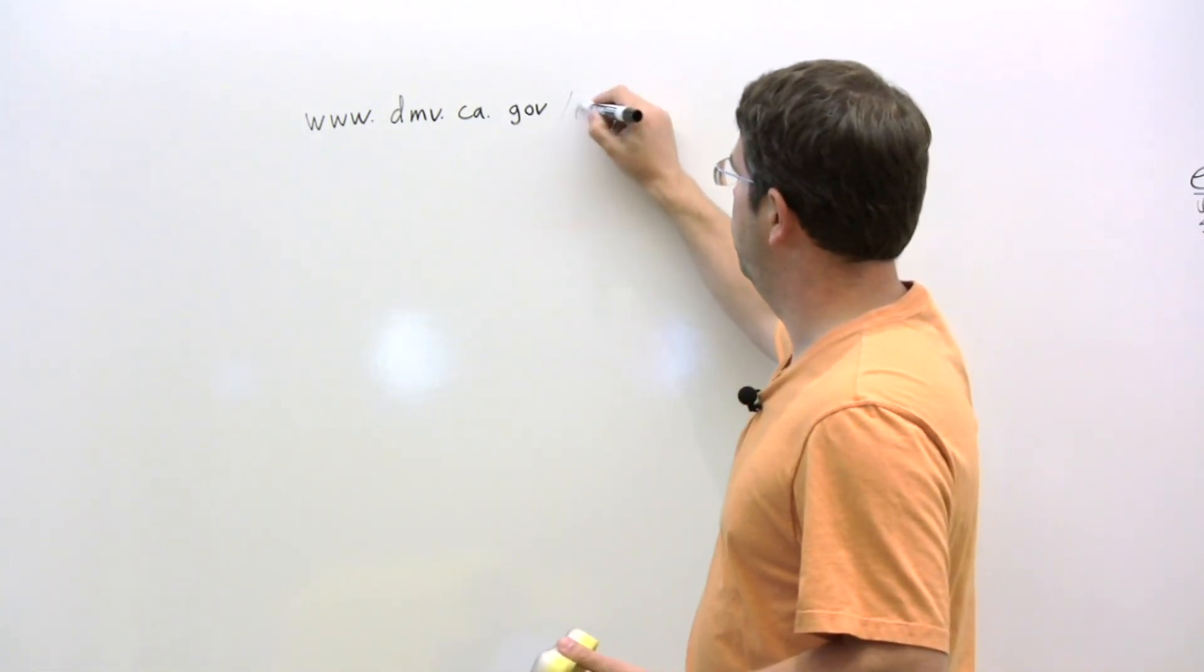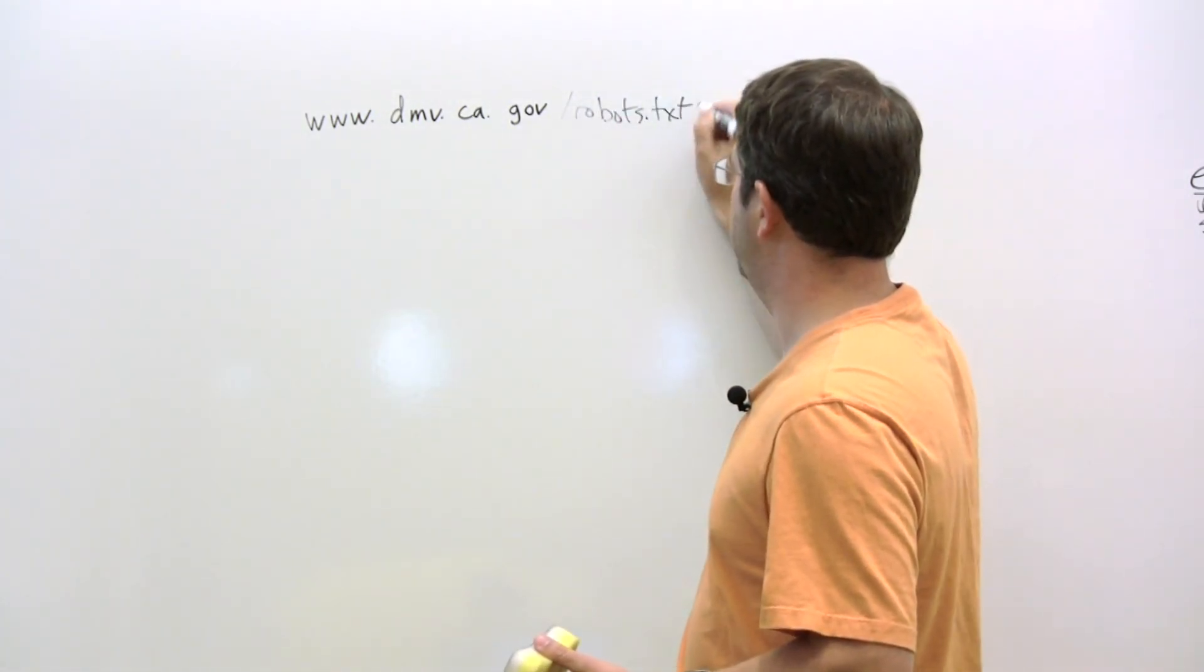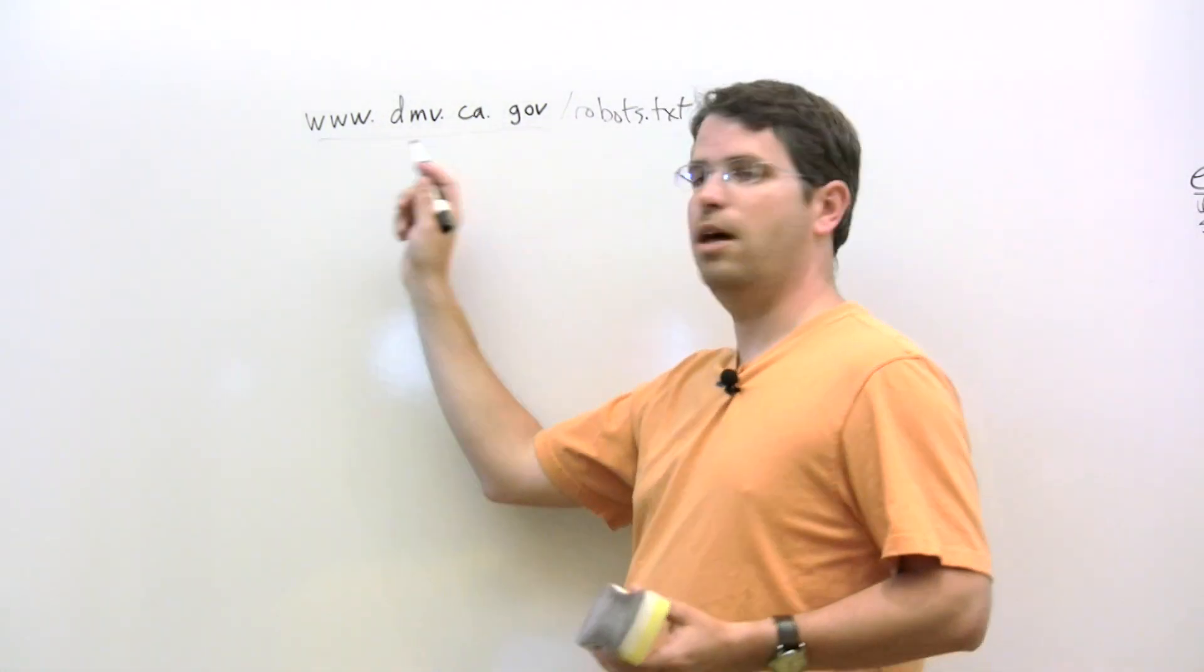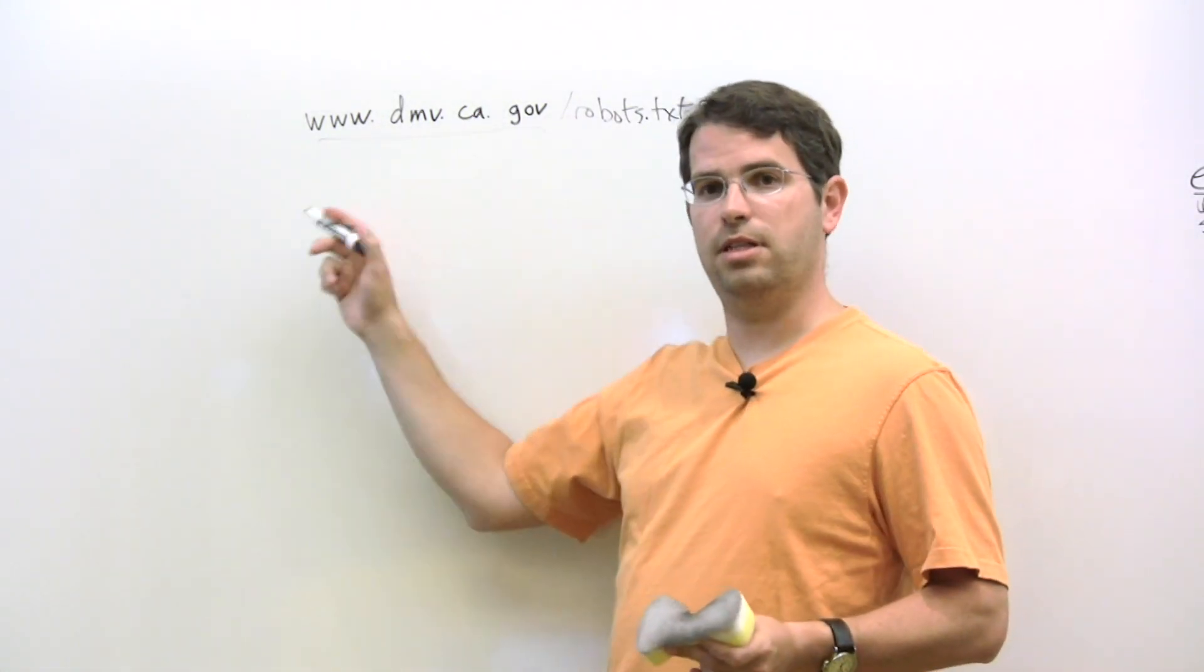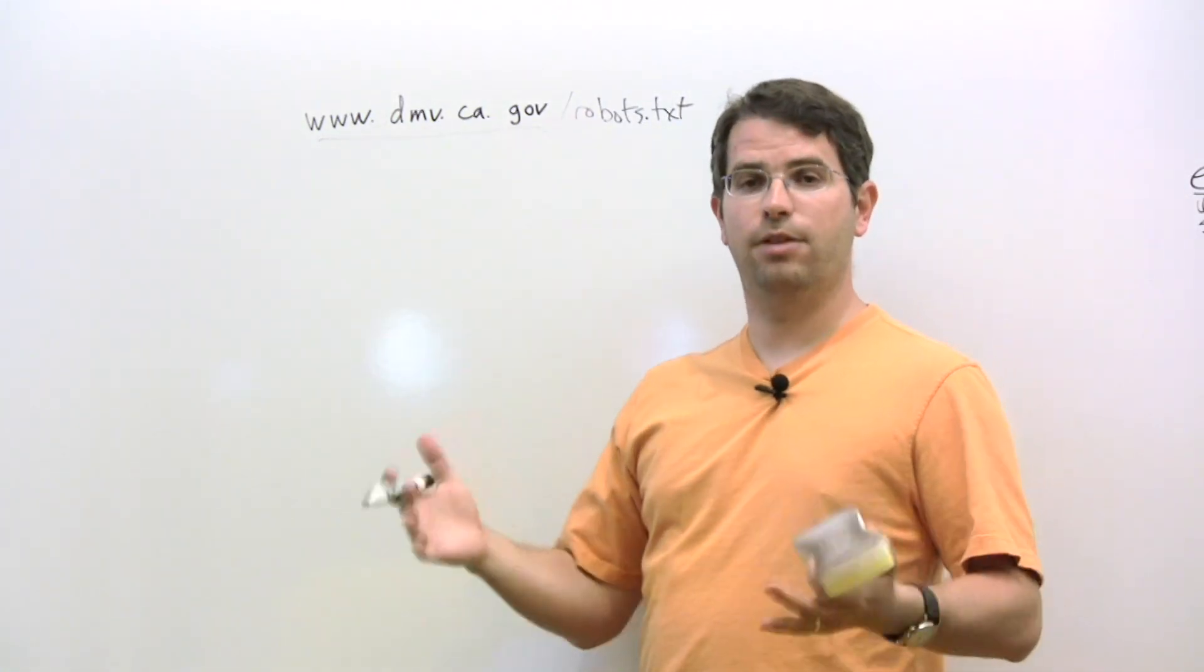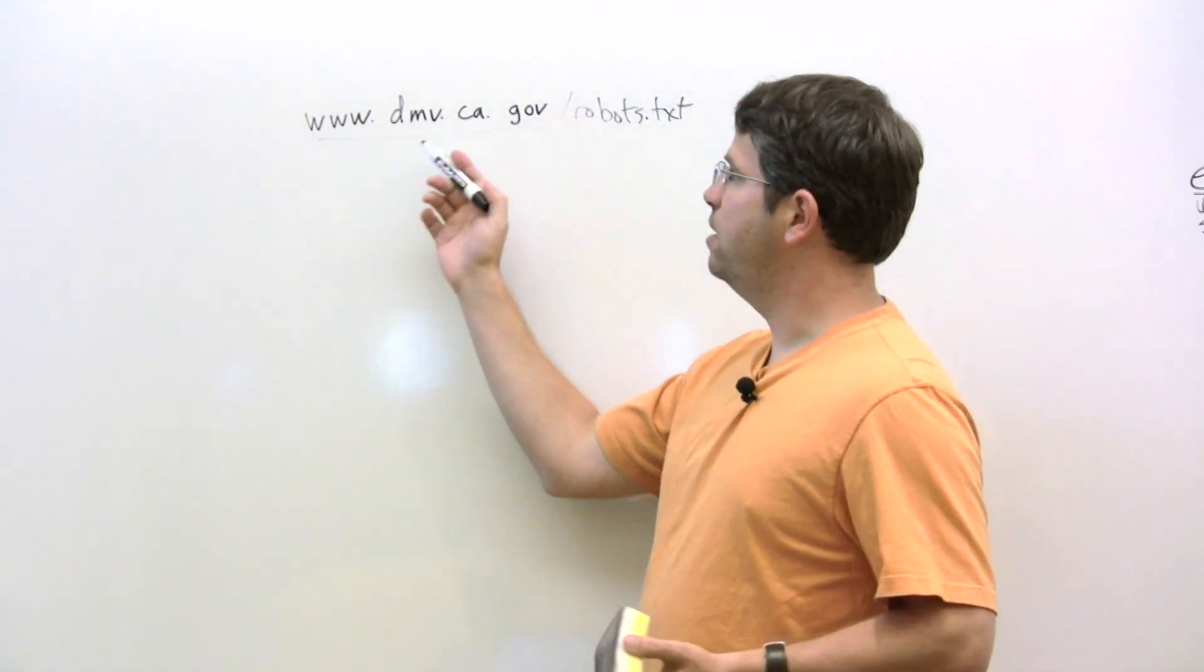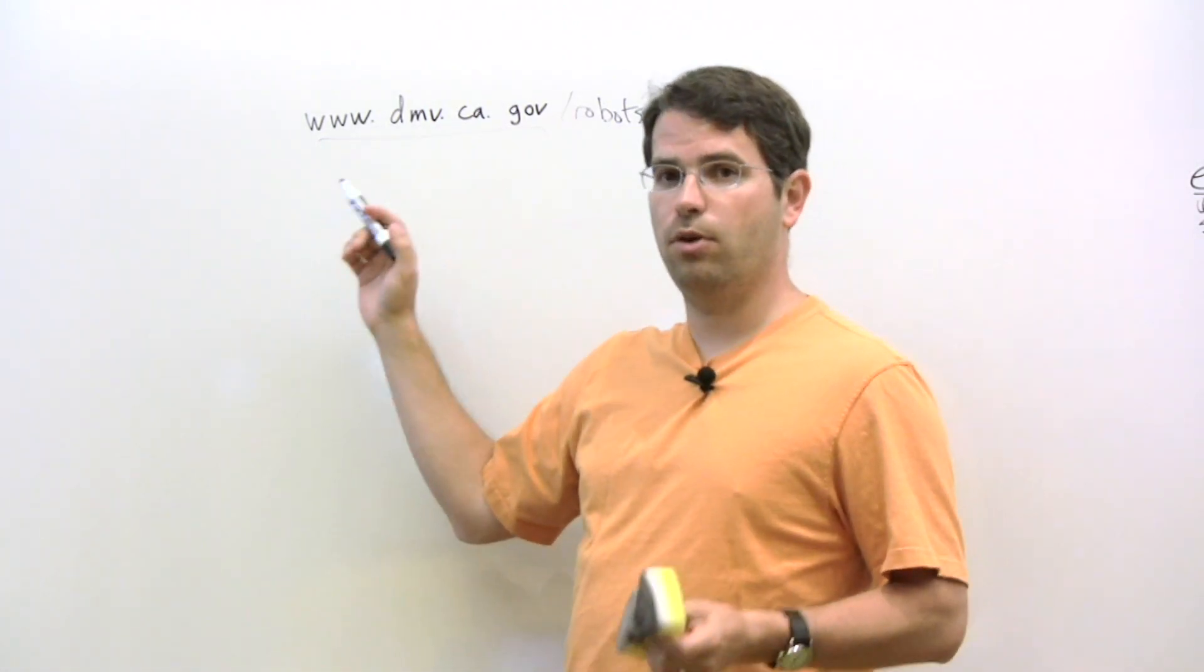So, even though they were using robots.txt to say you're not allowed to crawl this page, we still saw a lot of people linking to this page and they had the anchor text California DMV. So if someone comes to Google and they do the query California DMV, it makes sense that this is probably relevant to them and we can return it even though we haven't crawled the page.